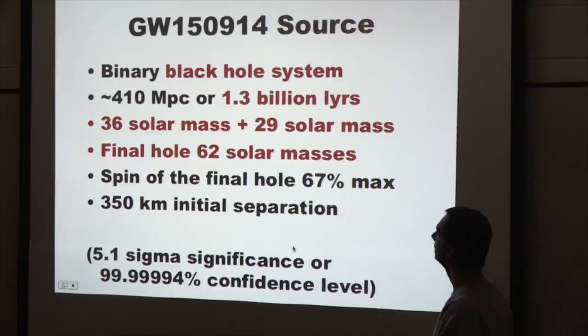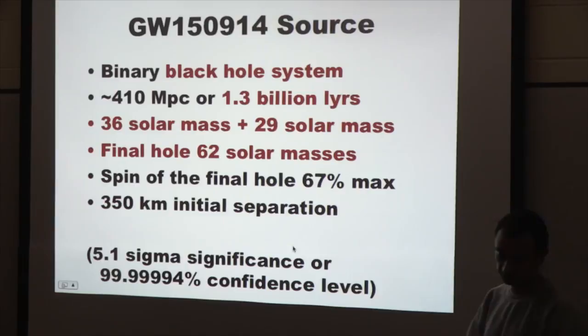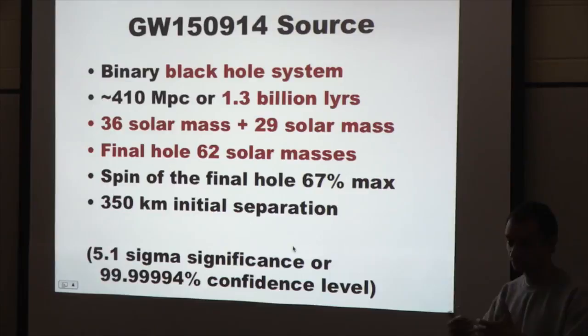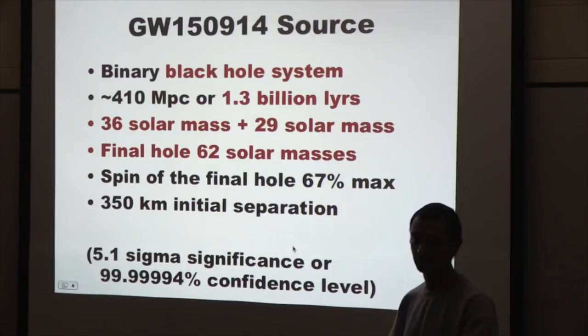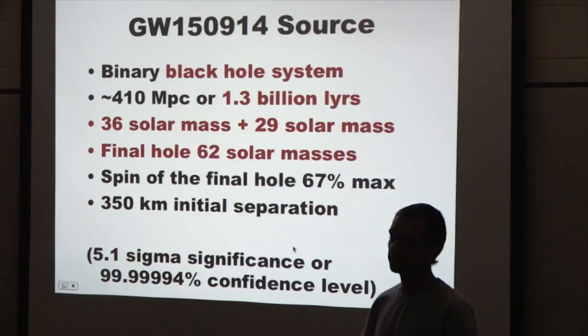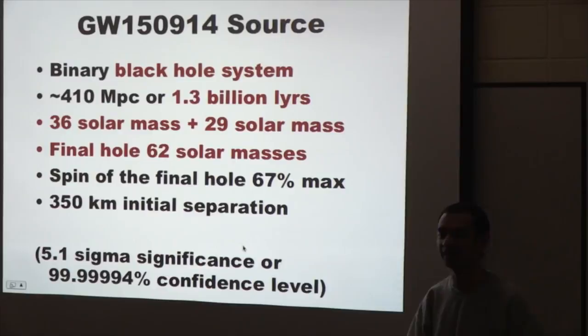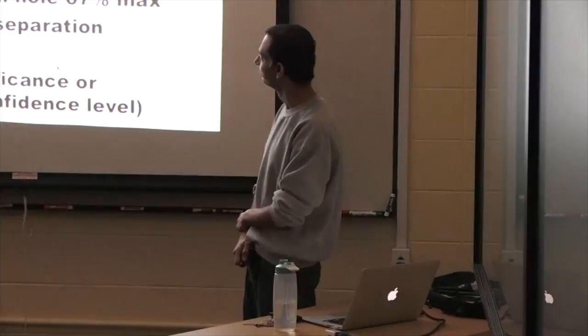The two black holes had masses of 36 and 29 solar masses, and the final merged black hole is about 62 solar masses. The system was located 1.3 billion light-years away, meaning this collision happened over a billion years ago. It's almost chilling: these two black holes merged a billion years ago, releasing a signal that traveled all the way to us — when the signal formed, human beings didn't exist; life was just getting started on Earth. Evolution carried us to the point where we built this detector, turned it on, and the signal passed right by and we caught it.